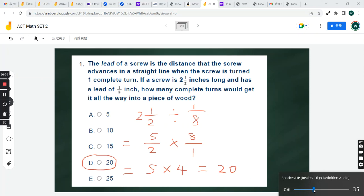To do this properly, you need to convert this mixed number into an improper fraction. 2 and 1/2 is equivalent to 5/2. So 5/2 divided by 1/8.